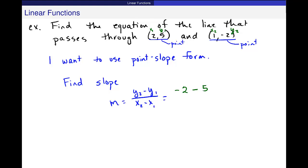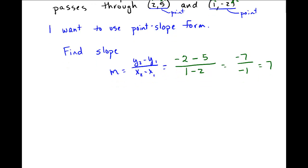y2 minus y1, change in y, over x2 minus x1, change in x. And you can label these whatever you want. I'll label this one as x1, y1, and x2, y2. It does not matter. You'll get the same answer either way. So -2 minus 5 over 1 minus 2. So I get negative 7 over negative 1. You guys get 7? Okay.